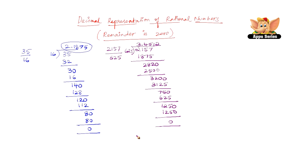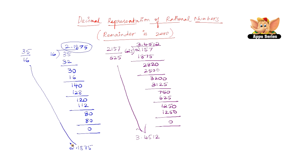So 3.4512 is the decimal representation of the rational number 2157 by 625. Similarly, 2.1875 is the decimal representation of the rational number 35 by 16. Let us take another example.